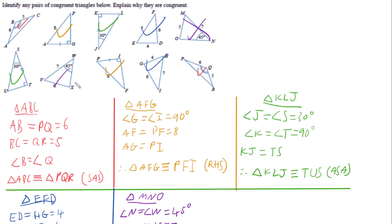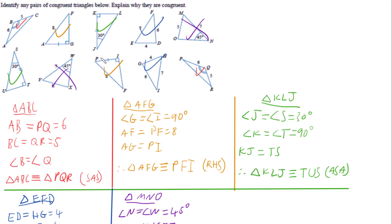These triangles are not congruent, and they can't be congruent to any of the others either, because there's no other triangle with a 45-degree angle or side lengths of both 5 and 7 shown. So there's no other test we can do to show they are congruent.